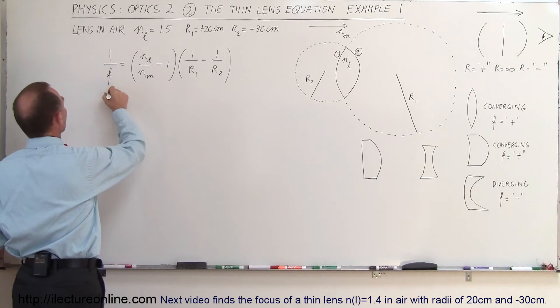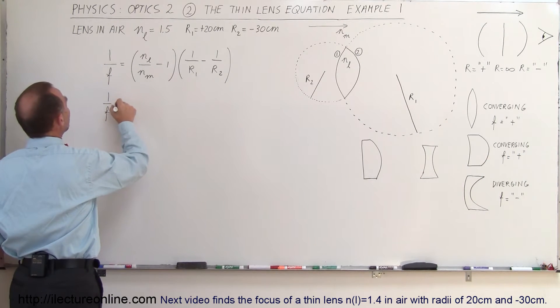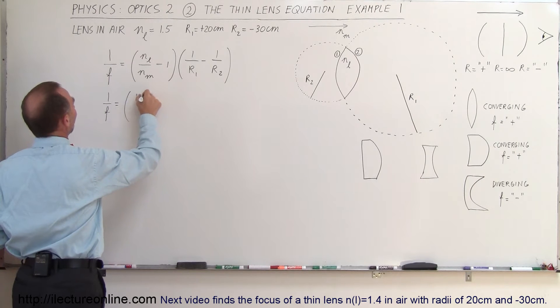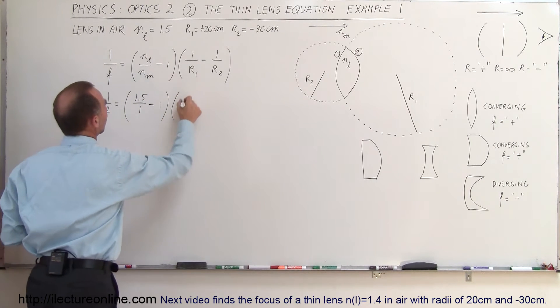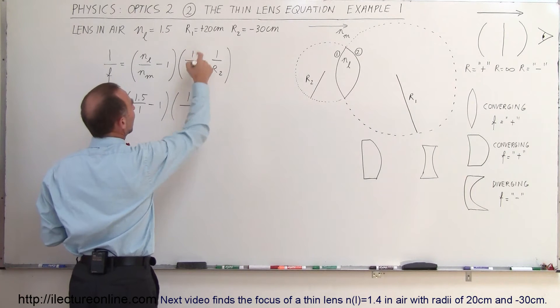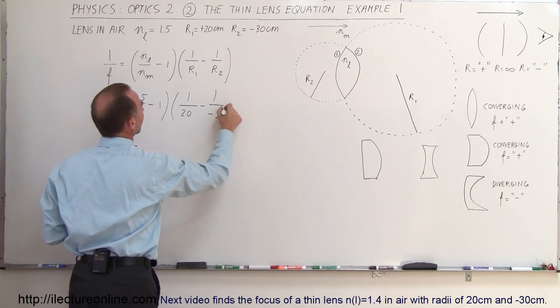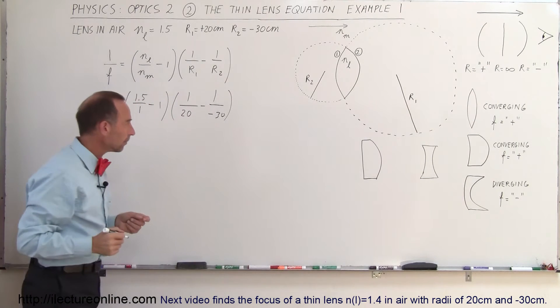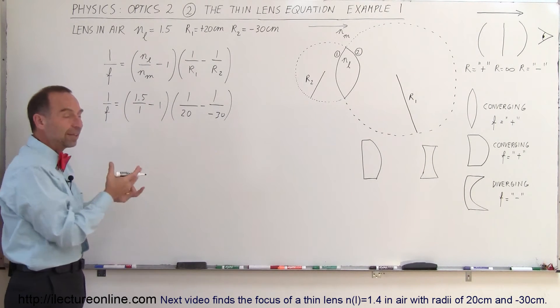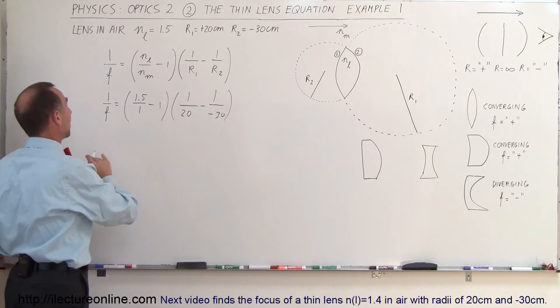So 1 over the focal length of the lens will be equal to 1.5 divided by 1 minus 1, times 1 over the first radius, which is 20 centimeters, minus 1 over minus 30 centimeters. We leave everything in centimeters, so the focal length will come out in centimeters.